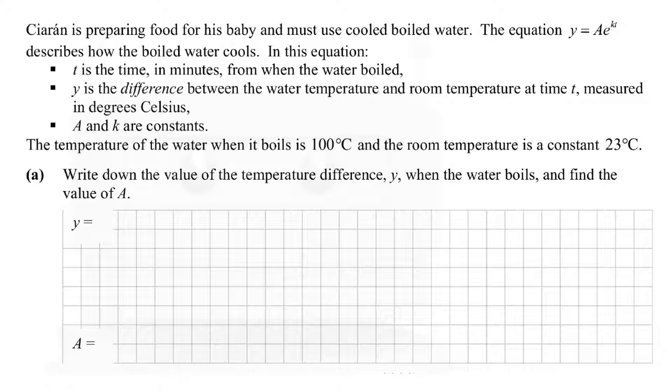Ciarán is preparing food for his baby and he must use cooled, boiled water. The equation y equals Ae to the power of kt describes how boiled water cools. In this equation, t is the time in minutes, and y is the difference between water temperature and room temperature at time t. A and k are constants. The temperature of the water when it boils is 100 degrees, and room temperature is a constant 23 degrees Celsius. That's important - that causes a lot of confusion for people.